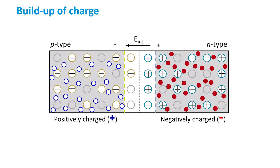The drift current of photo-generated minority carriers across the depletion region will not increase indefinitely but will reach a steady state. The collection of photo-generated minority carriers in the regions where they become majority carriers is increasing the concentration of majority carriers above the equilibrium value. A system — in our case the P-N junction diode — tends to go back to the original state, so at a certain moment the diffusion of majority carriers will balance the increased drift across the depletion region.